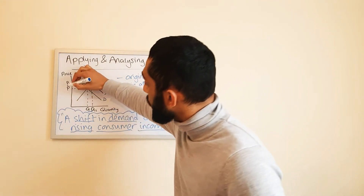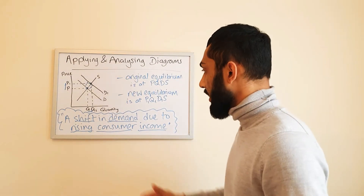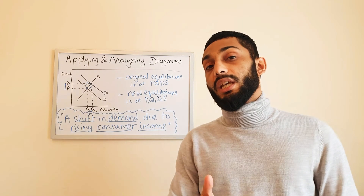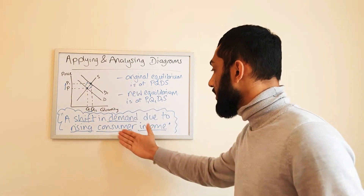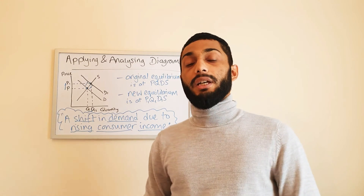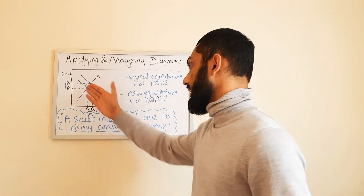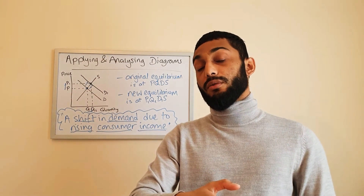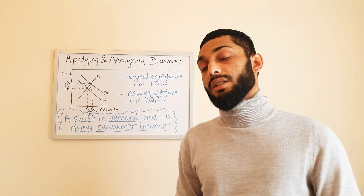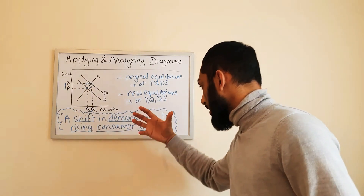You'll notice that price has also gone up, so that's something else you can annotate and explain: with quantity increasing from Q to Q1 there's also a simultaneous increase in prices from P to P1. That's because consumers have more money and are willing to spend into the economy, shifting demand upwards but also creating inflation — which could actually be used as evaluation here, because it is causing something called demand-pull inflation, pulling up price levels because of an increase in demand.